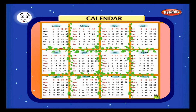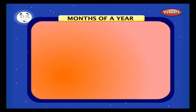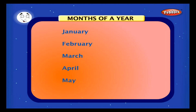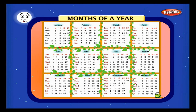The calendar shows us the days, weeks, and months of a year. We have 365 days in a year, which is split into 12 months, namely January, February, March, April, May, June, July, August, September, October, November, and December. Some of the months have 31 days.